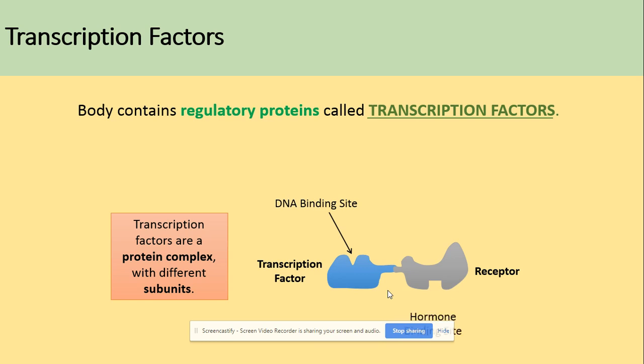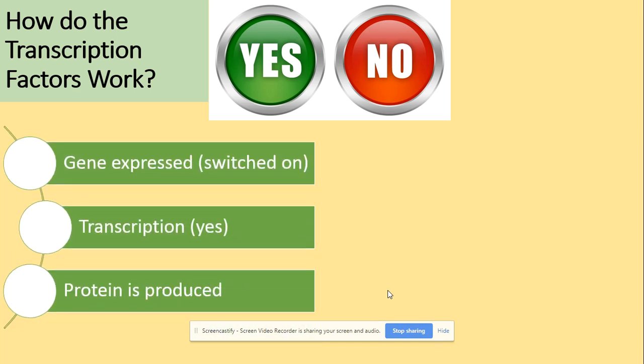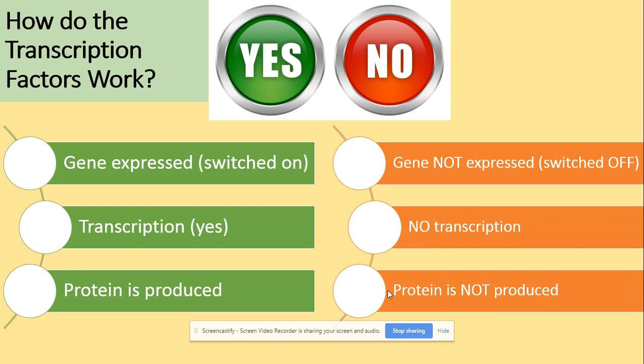On the receptor there is a hormone binding site. Transcription factors can work in two ways: they can express the gene so transcription takes place and a protein is produced, or they can inhibit gene expression so transcription does not take place and no protein is produced.